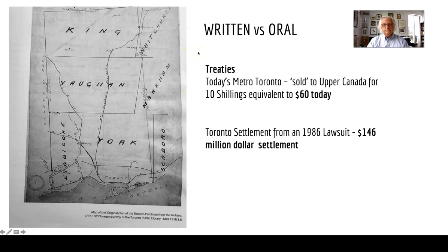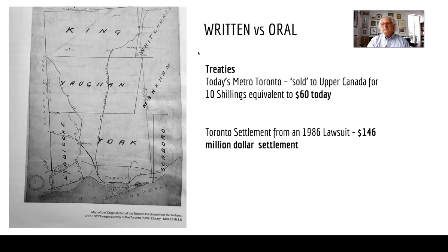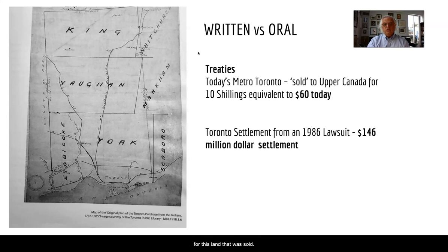Looking at the treaties that were signed — indigenous people have an oral tradition; they don't have a written tradition as Europeans did. Europeans loved to write everything down. This map on the left shows Toronto, York, Vaughan, King, even Scarborough. This map described 'attractive land' that was sold to Upper Canada — a colony before Canada was born — for 10 shillings, or the equivalent of about 60 dollars today. As time went on, the Mississaugas of New Credit challenged this, and in a court settlement in 1986 they were awarded a 146 million dollar settlement for land that had been sold for basically a pittance.